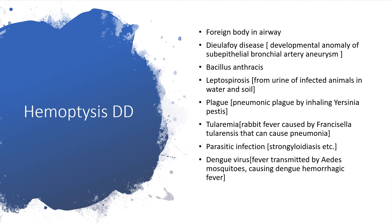Bacillus anthracis, used during war as a weapon of mass destruction, or leptospirosis — which can be acquired from the urine of infected animals in water or soil — could cause hemoptysis. Pneumonic plague, caused by inhaled Yersinia pestis, or tularemia — rabbit fever caused by Francisella tularensis — can cause pneumonia. It could also be secondary to parasitic infection, particularly strongyloidiasis, and dengue fever.